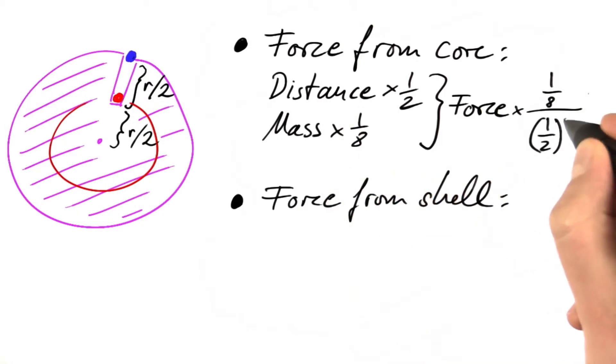Divided by one-half squared, because the distance squared appears in the denominator. And in total, this is a factor of one-half.